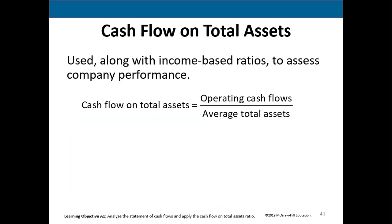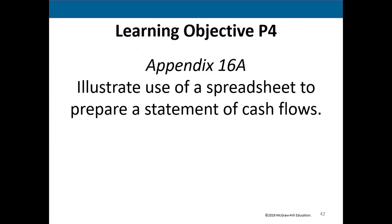Cash flow and total assets will be covered in the next chapter. There are appendices in this chapter: Appendix A shows how to prepare the operating cash flow section using the direct method — especially useful if you're an accounting major — and there's also a spreadsheet in Appendix B. Please post any questions you may have to the discussion board.